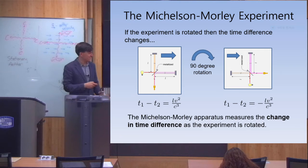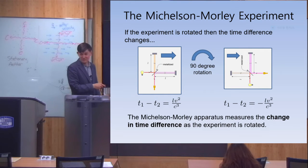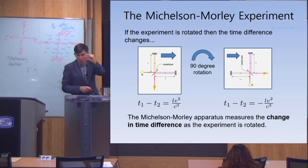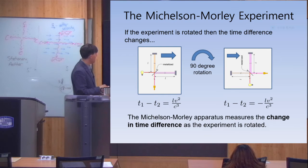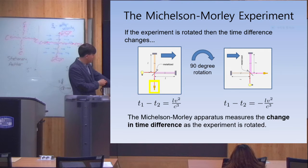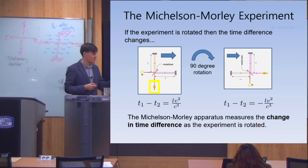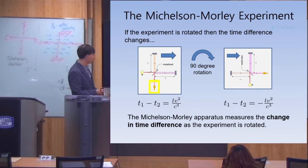The really clever part of the experiment is how do you measure the change in the time difference? We already said that LV²/C³ is going to be an incredibly small thing that we need to measure. This part of the experiment is called an interferometer, which allows you to measure very small changes in time.